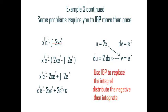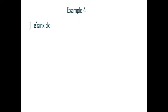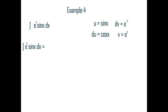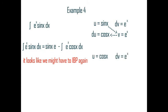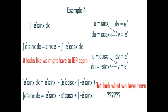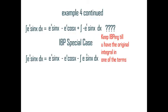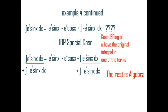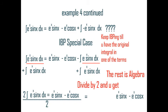I think I get it now. You forgot plus C again. Example 4: Integrate e to the x sine x dx. Our u equals sine x and dv equals e to the x dx. The derivative of sine x equals cosine x, and the anti-derivative of e to the x dx equals e to the x. After plugging it into our equation, it looks like we might need IBP again. The second u equals cosine x and the second dv equals e to the x. The derivative of cosine x equals negative sine x, and the anti-derivative of e to the x dx equals e to the x. This is what we call the IBP special case. Keep IBP-ing until you have the original integral in one of the terms, then get that integral to one side. The rest is algebra — divide by 2, and you get (e to the x sine x minus e to the x cosine x) over 2 plus C equals the integral of e to the x sine x dx.